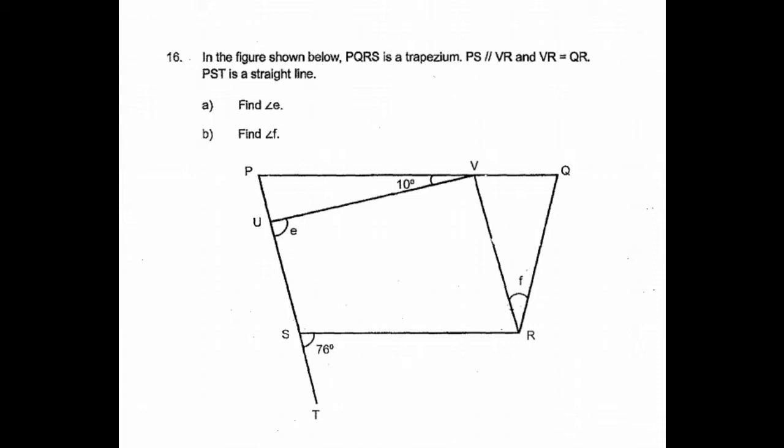In the figure shown below, PQRS is a trapezium. PS is parallel to VR, and VR is equal to QR. PST is a straight line. Find angle E and angle F.